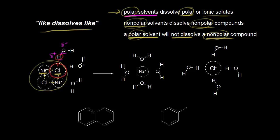If we get a bunch of water molecules — here's another one with a partially negative oxygen and a partially positive hydrogen — there's another attractive force. We can pull off these chloride anions from the solid and bring them into solution. On the right, we have our chloride anion in solution, surrounded by water molecules with all these partially positive hydrogens interacting with our negatively charged chloride anion.